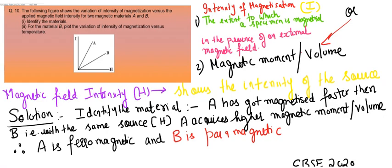Some specimens can get magnetized very fast and some don't get magnetized very fast. As a result of magnetization, these specimens acquire a magnetic moment per unit volume. So intensity of magnetization is mathematically represented as magnetic moment per unit volume.